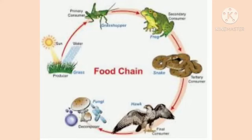Now let us see the food chain. A definite sequence in the interaction between producers, consumers, and saprophytes is called a food chain. Each food chain consists of four, five, or more links. For example, an insect feeds upon larvae of different plants, but this insect is prey for various animals like frog, which is again prey for the snake, and snake is prey for eagle.